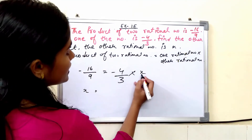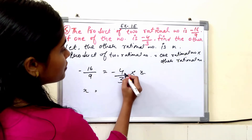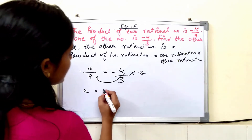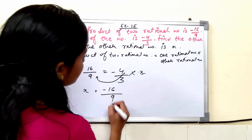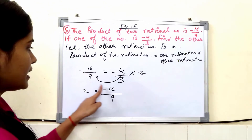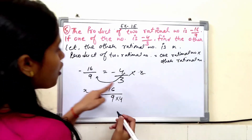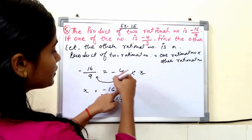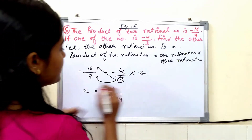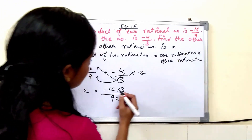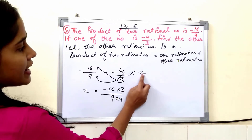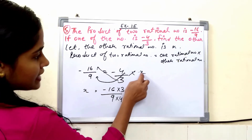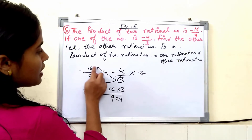So x multiplied by minus 4 upon 3 equals minus 16 upon 9. To find x, we divide minus 16 upon 9 by minus 4 upon 3. That gives us x equals minus 16 upon 9 multiplied by the reciprocal.